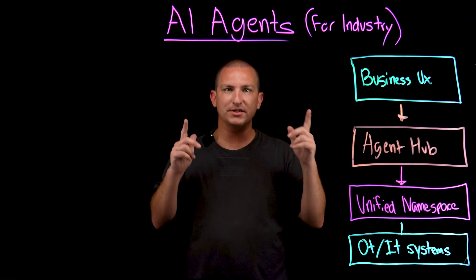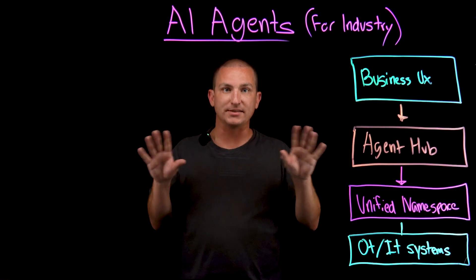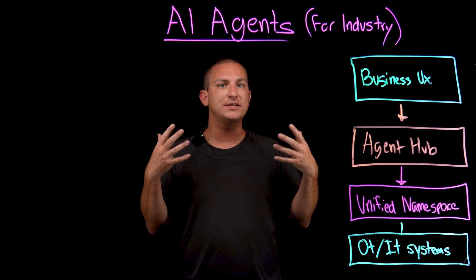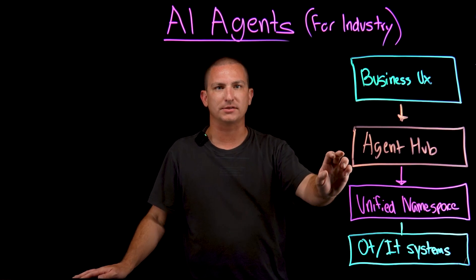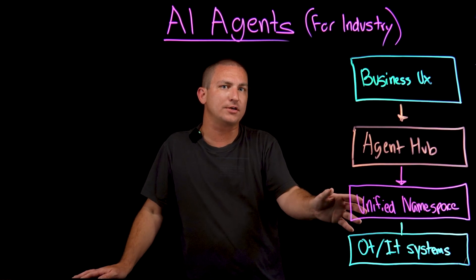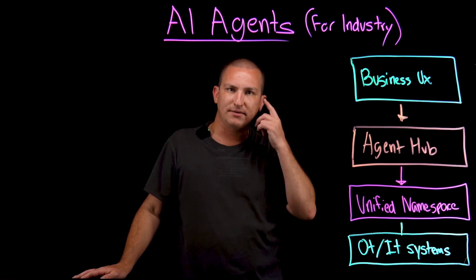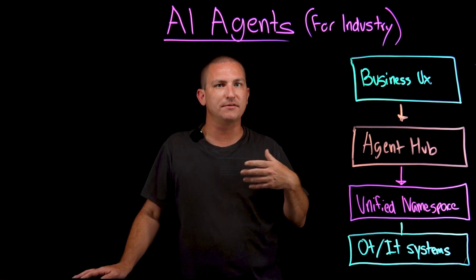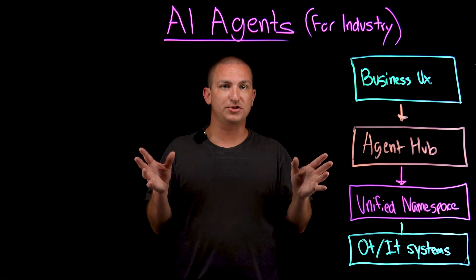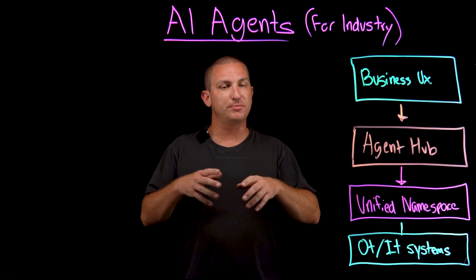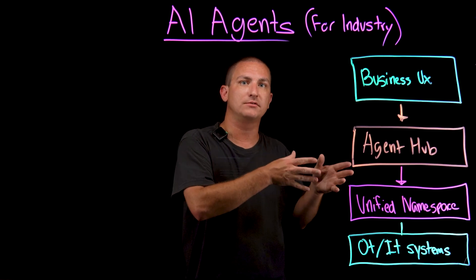So what is an AI agent? Think of it as a digital co-worker with three superpowers: it senses, it thinks or reasons, and then it acts. It senses by subscribing to real-time topics in your unified namespace — the same MQTT hierarchy that your PLCs and your CMMS already publish to. It thinks by running a reasoning loop inside of a large language model or similar, a purpose-built model that is trained to achieve a specific outcome.